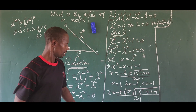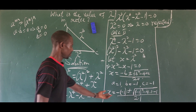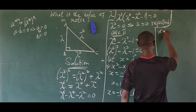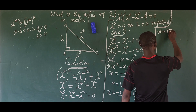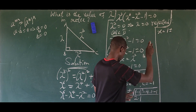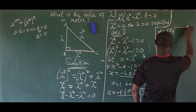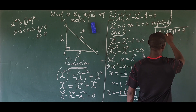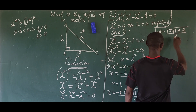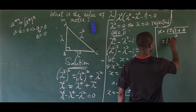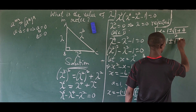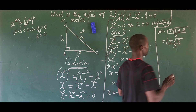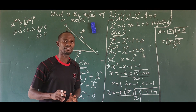Opening up the expression gives us x equals one plus or minus the square root of one plus four, all over two, which equals one plus or minus the square root of five, all over two. We therefore have two values of x.